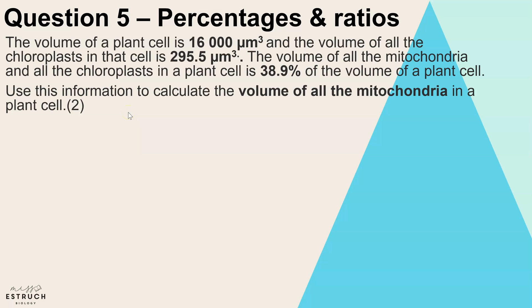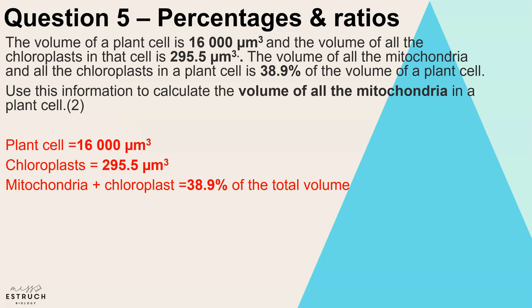The first thing I would do is actually just pull out all of that key information so I can see a bit more clearly what I'm working with. So I've got the plant cell volume, chloroplast volume, and then the fact that the mitochondria and chloroplasts combined is 38.9 percent of the volume.